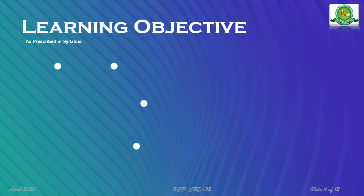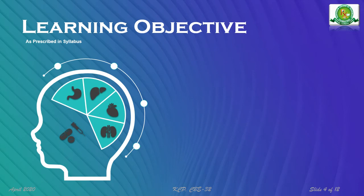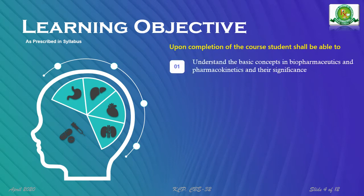demonstrable skills and knowledge that will be acquired by students as a result of instruction. Upon completion of the course, the student shall be able to meet the following four objectives. The first objective is to understand the basic concepts in biopharmaceutics and pharmacokinetics and their significance.